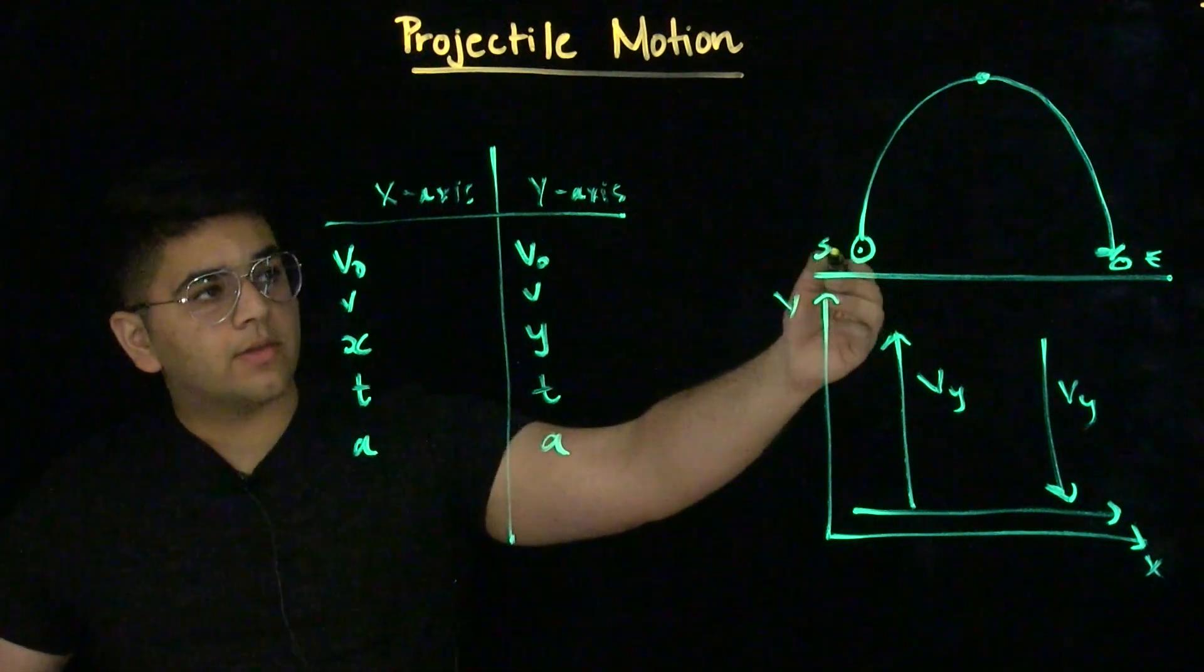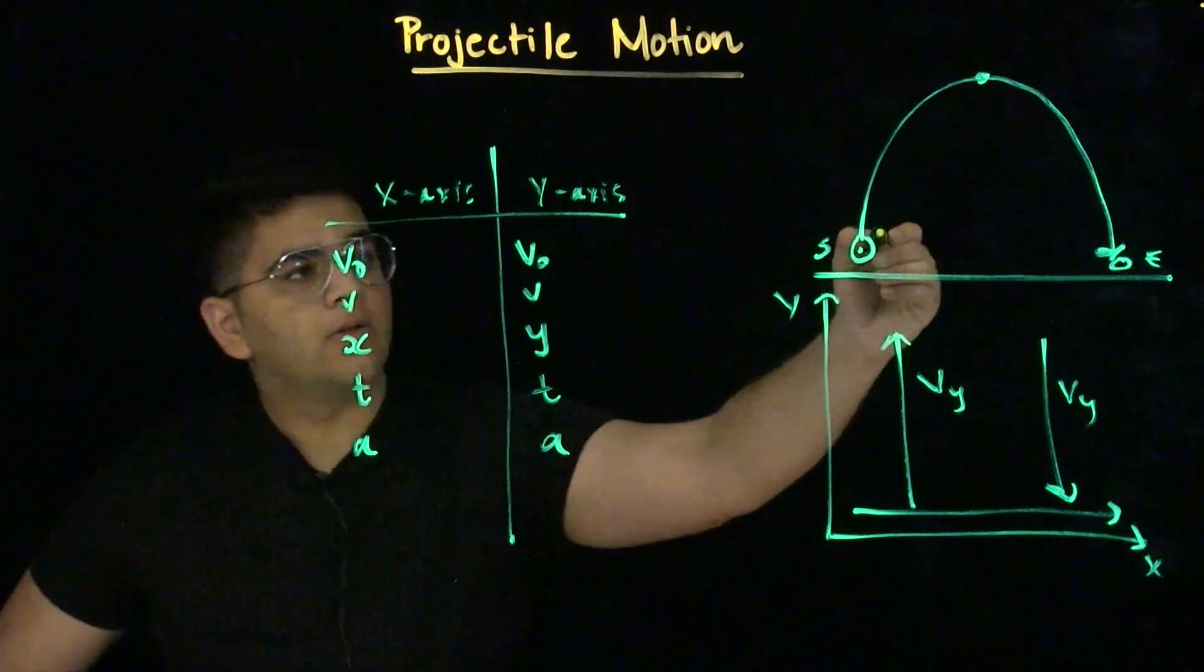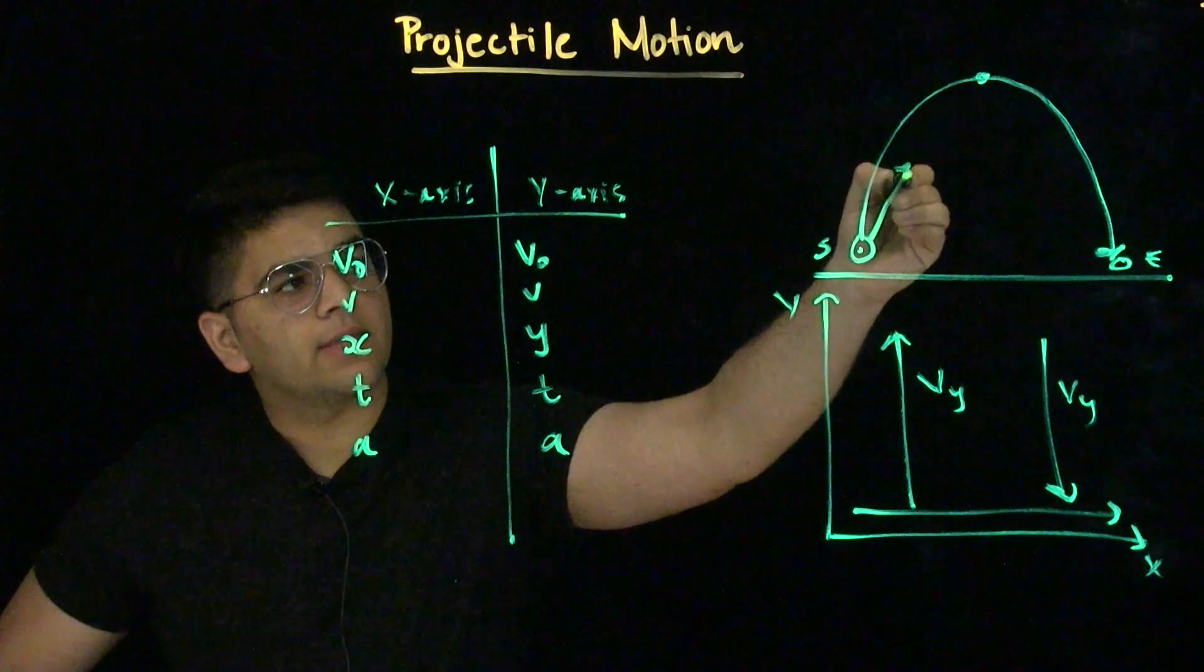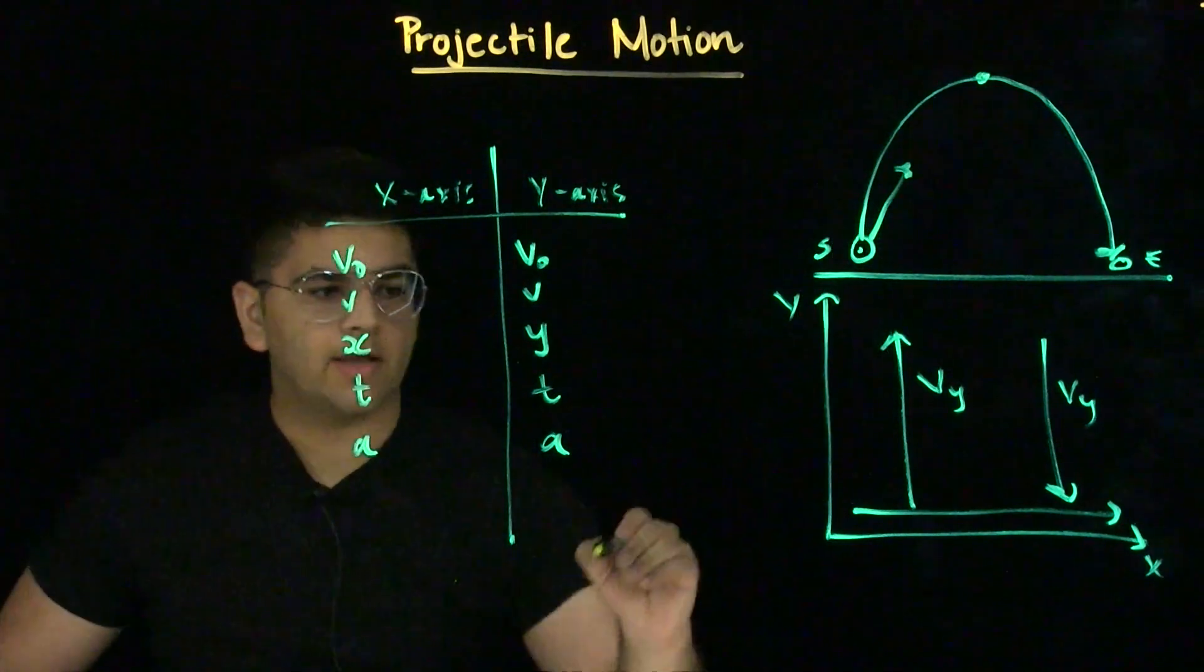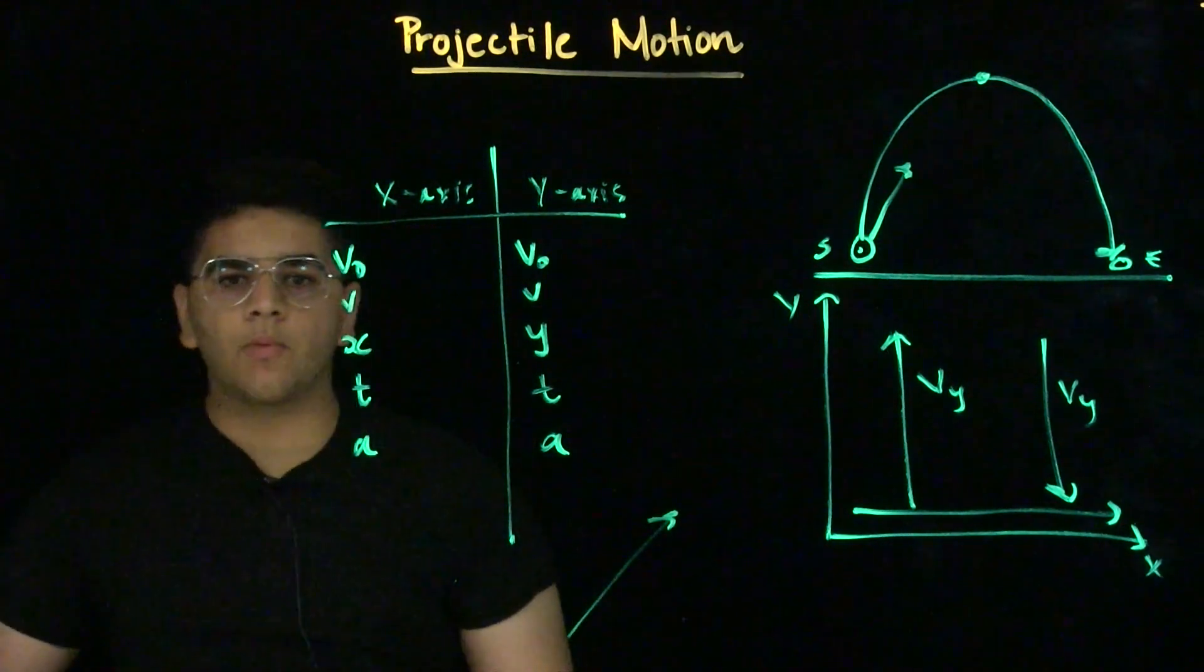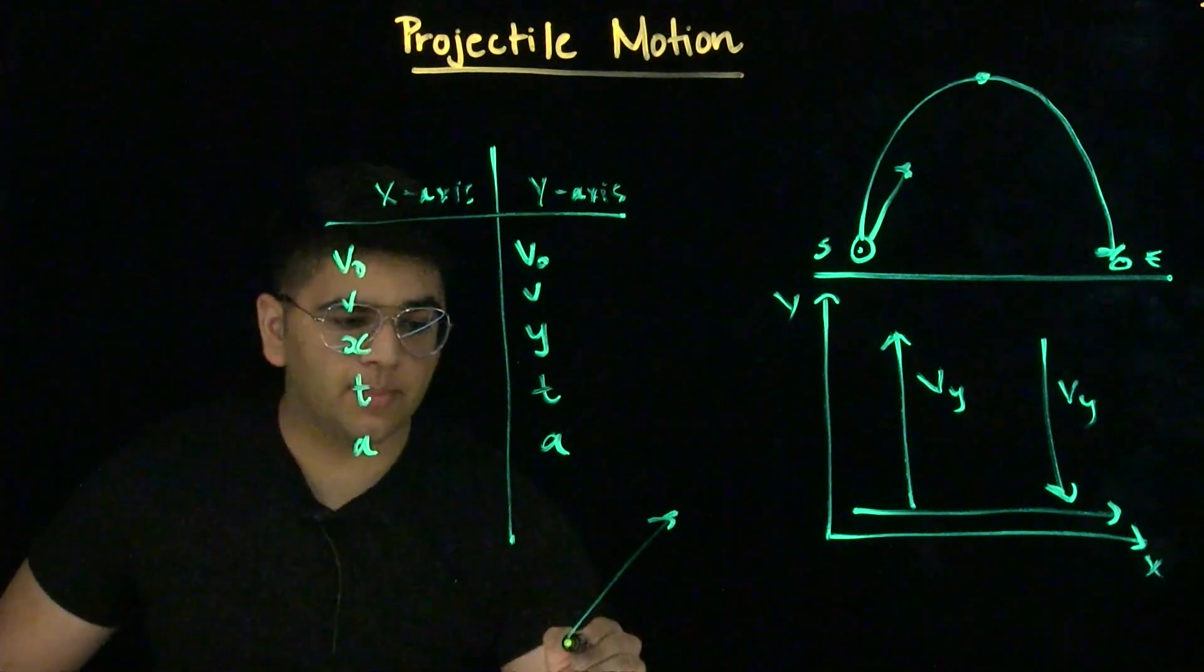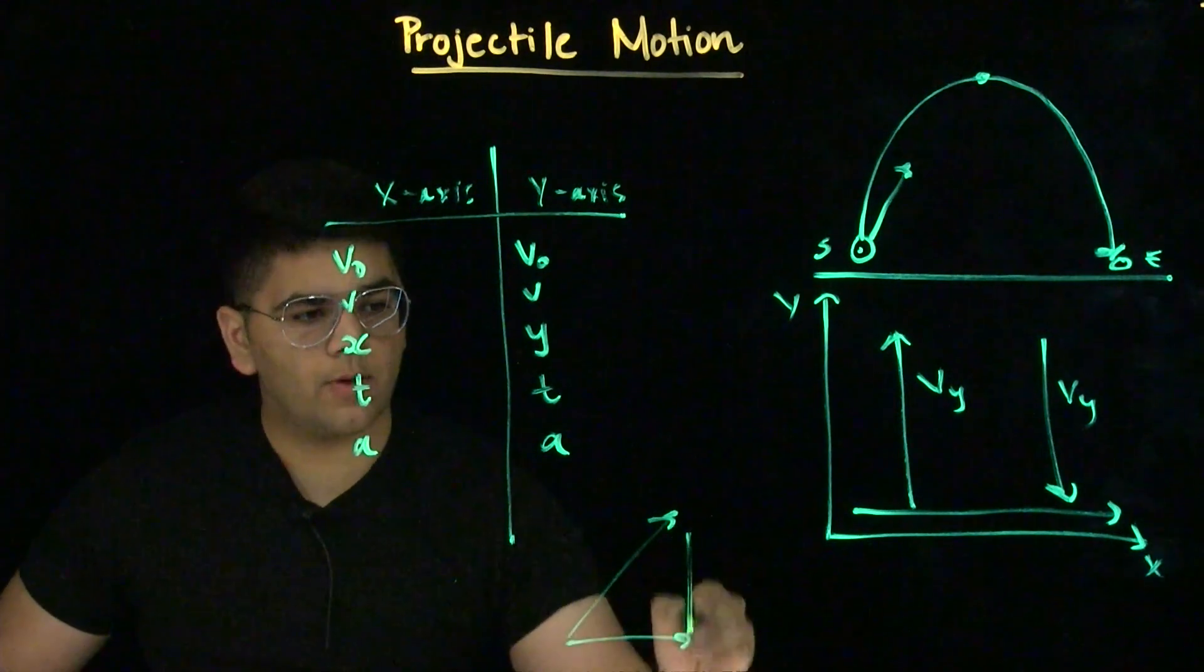If you look at the velocity vector for this projectile, we'll see that it will look something more like this. Like a little diagonal. Now, that means that it has an x component and a y component.